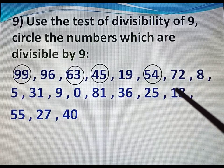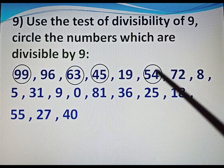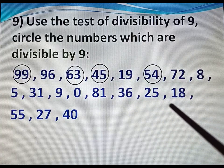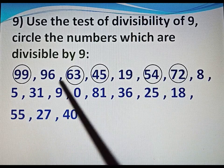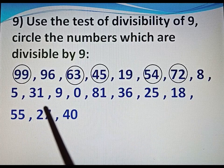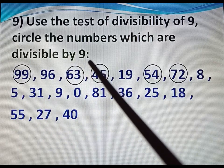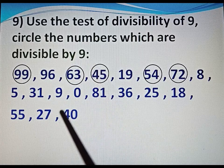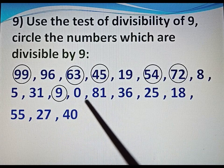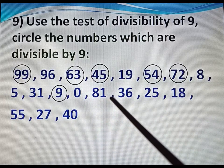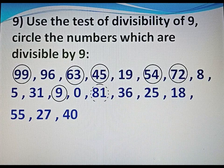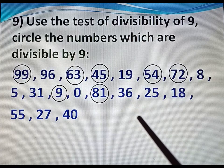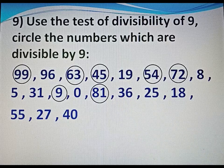Next number 8: not divisible by 9. Next number 5: not divisible by 9. Next number 31: 3 plus 1 equals 4, not divisible by 9. Next number 9: 9 is divisible by 9 — circle 9. Next number 0: not divisible by 9. Next number 81: 8 plus 1 equals 9, divisible by 9 — circle 81. Next number 36: 3 plus 6 equals 9, divisible by 9 — circle 36. Next number 25: 2 plus 5 equals 7, not divisible by 9.